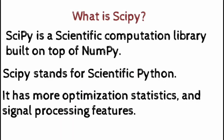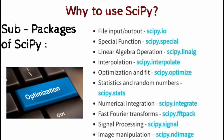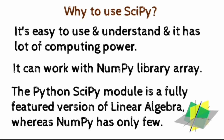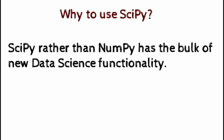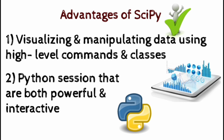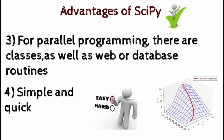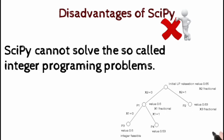Let's revise SciPy quickly. SciPy is a scientific computation library built on top of NumPy; it stands for Scientific Python, and has more optimization, statistics, and signal processing features. The founder of NumPy also created SciPy. Why use SciPy? It has sub-packages such as file I/O, special functions, linear algebra operations, interpolation, optimization and fit, statistics, fast Fourier transforms, signal processing, and image manipulation. It is easy to use with a lot of computing power and can work with NumPy arrays. SciPy is better than NumPy because it has many new data science functionalities. Advantages include easy data visualization and manipulation, more powerful Python sessions, and better parallel programming support. Its main disadvantage is that it cannot solve integer programming problems.